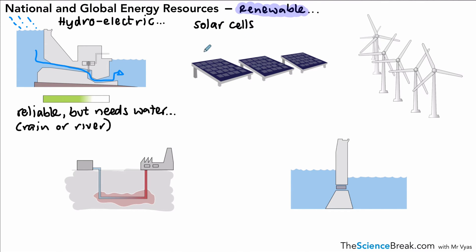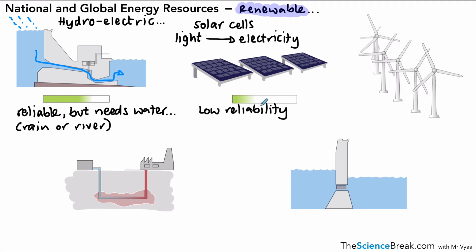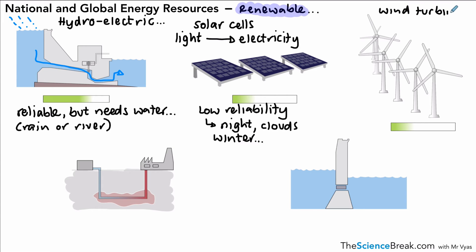Solar cells transfer light energy into electricity. Their reliability is quite low because they rely on sunlight — there's no sunlight at night, and cloud cover and winter conditions greatly reduce the amount of light, especially in the northern and southern hemispheres. Wind turbines also have low reliability because we need wind to make them work; if there's no wind, little or no electricity is generated, so they need to be built in very windy locations.